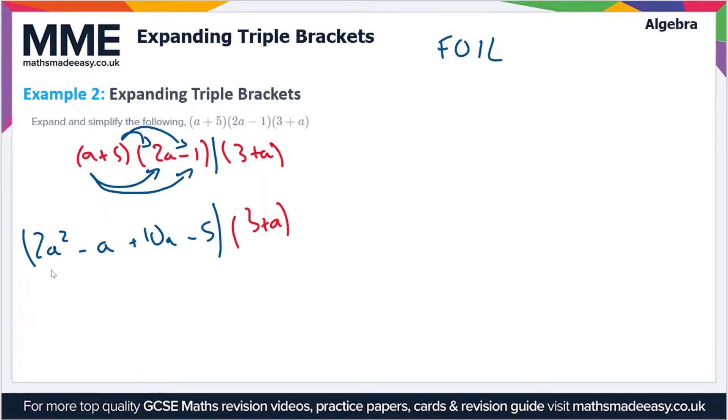Let's collect the like terms here. We've got 2a² on its own, then -a + 10a which gives us +9a, then -5. So this is our double bracket result.